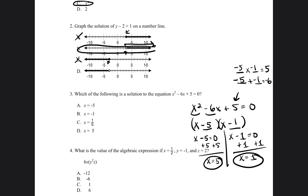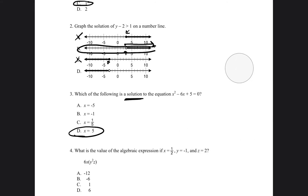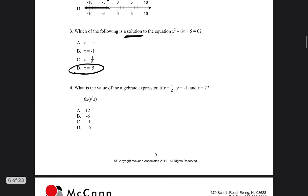So our answer choice is going to be D, because it says which of the following is a solution to the equation, and x equals 5 is one of them. Let's go ahead and go to question number 4.